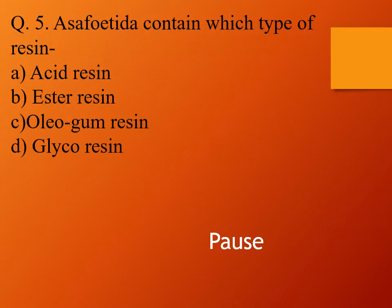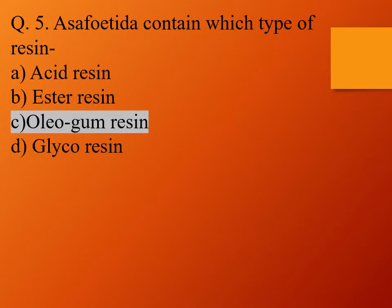Question 5. Asafoetida contains which type of resin? Option A, acid resin; option B, ester resin; option C, oleogum resin; and option D, glyco resin. The right answer is oleogum resin. So asafoetida contains oleogum resin.